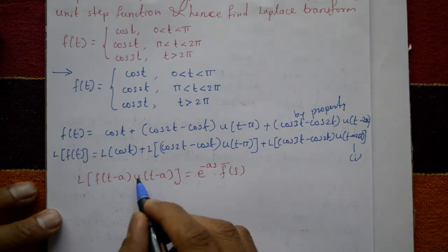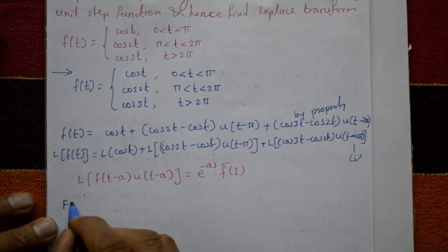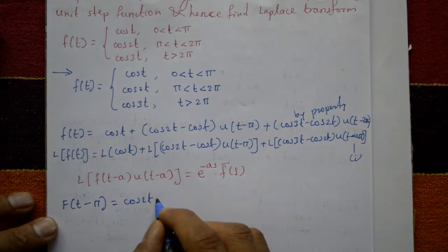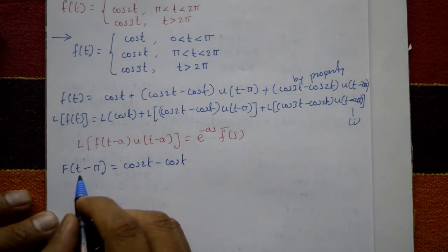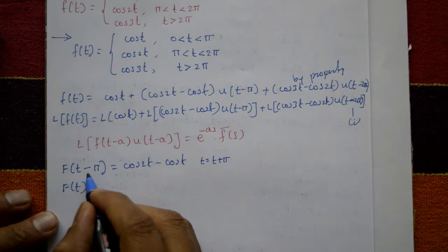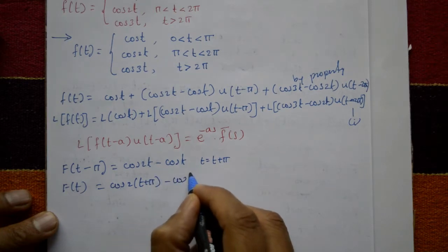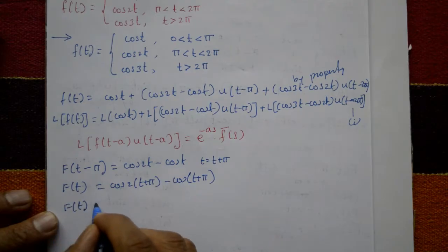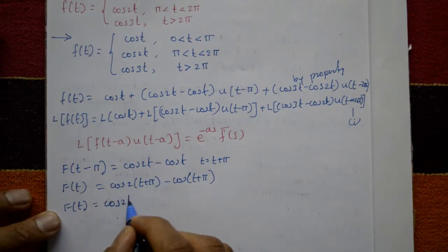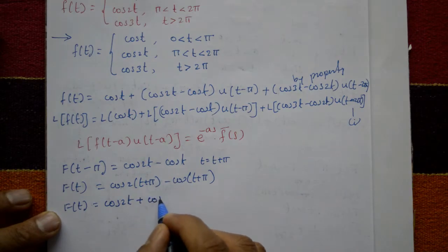For the second term, u(t − π) corresponds to a = π, and f(t − π) = cos 2t − cos t. To find f(t), replace t with t + π. Using cos(2(t + π)) = cos(2t + 2π) = cos 2t and cos(180° + θ) = −cos θ, we get f(t) = −cos 2t + cos t. So f̄(s) = s/(s² + 4) + s/(s² + 1).